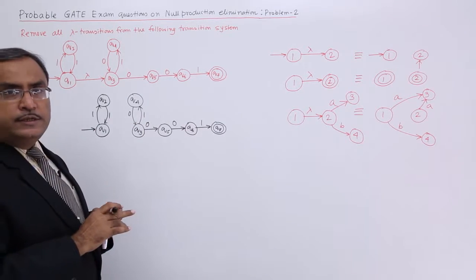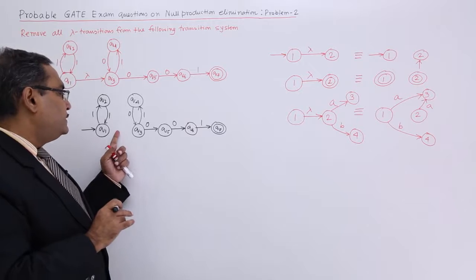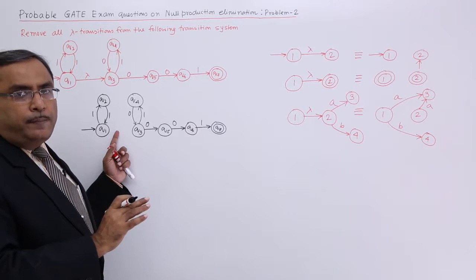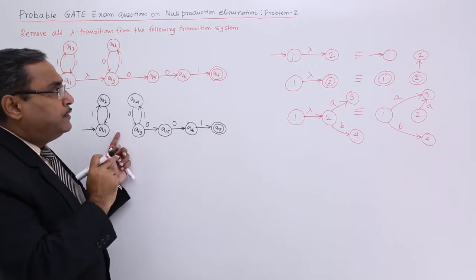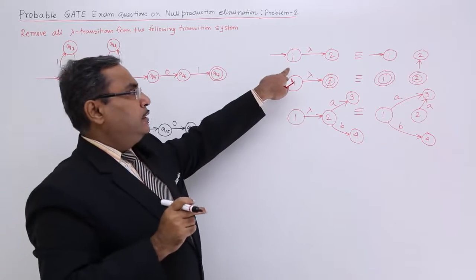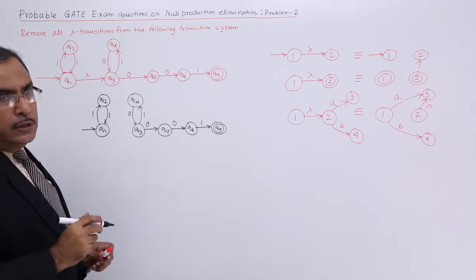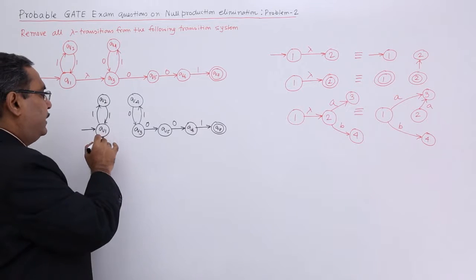Now let me apply the first rule, second rule, and the third rule. First rule: if 1 is initial, then make 2 also initial after removal of the null transition.